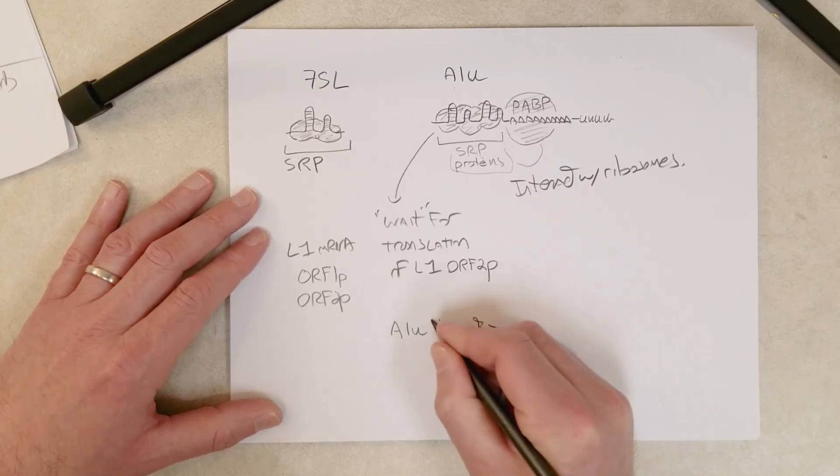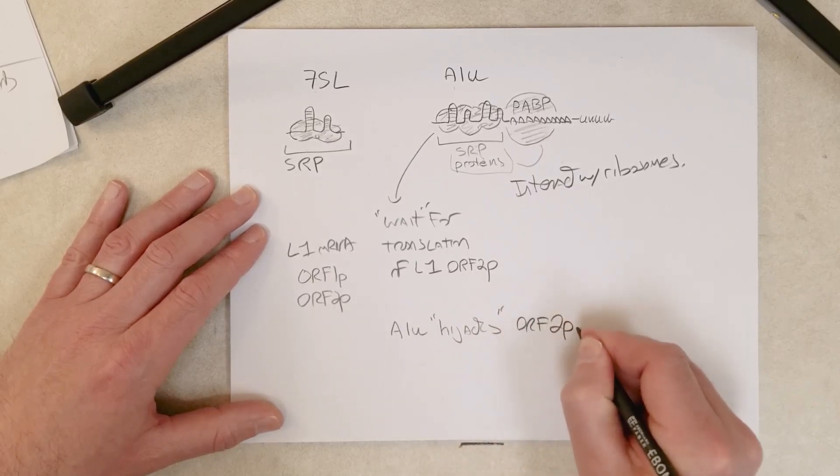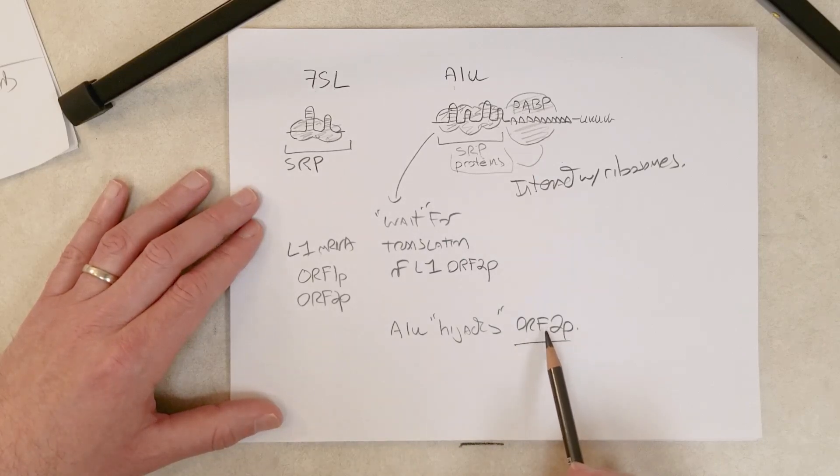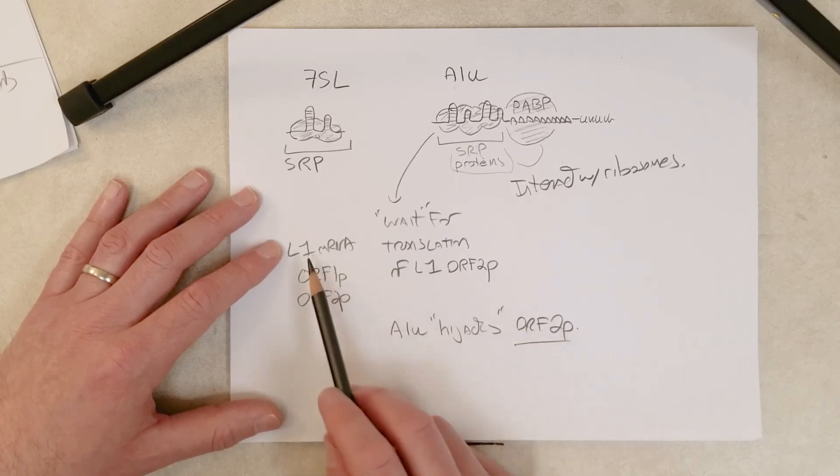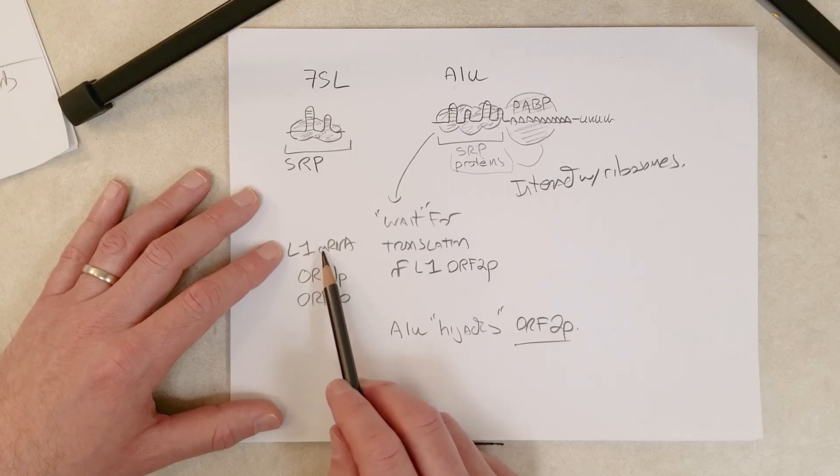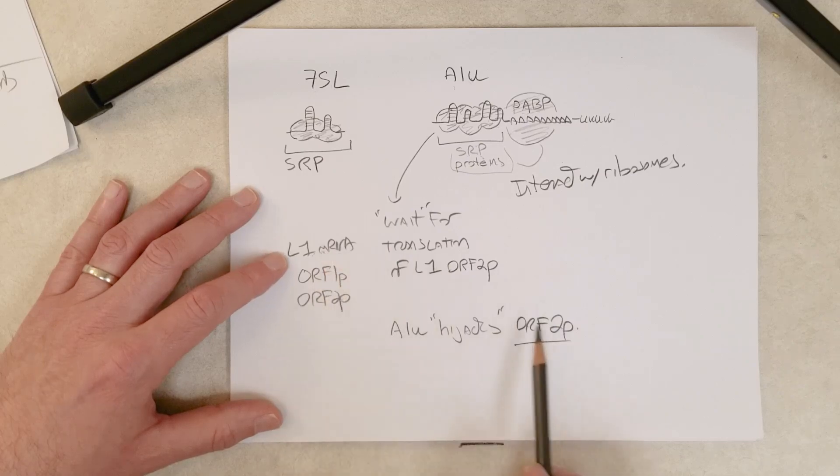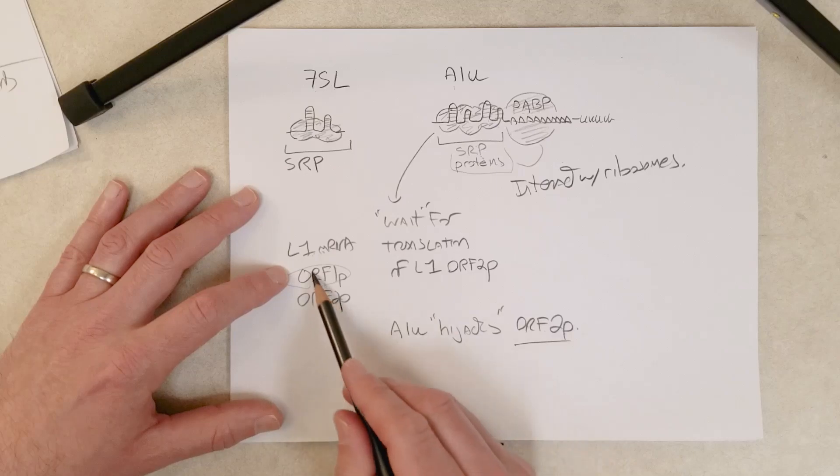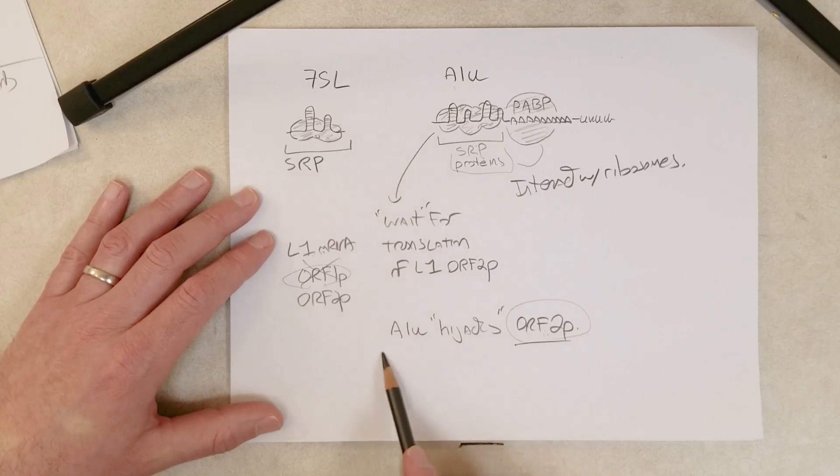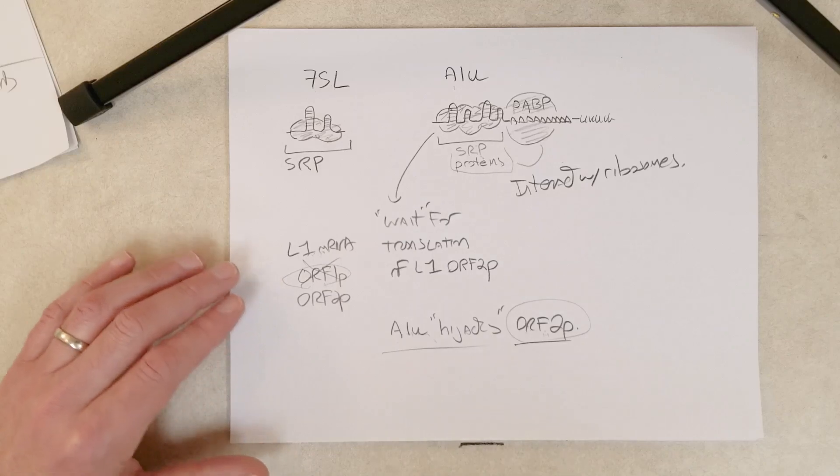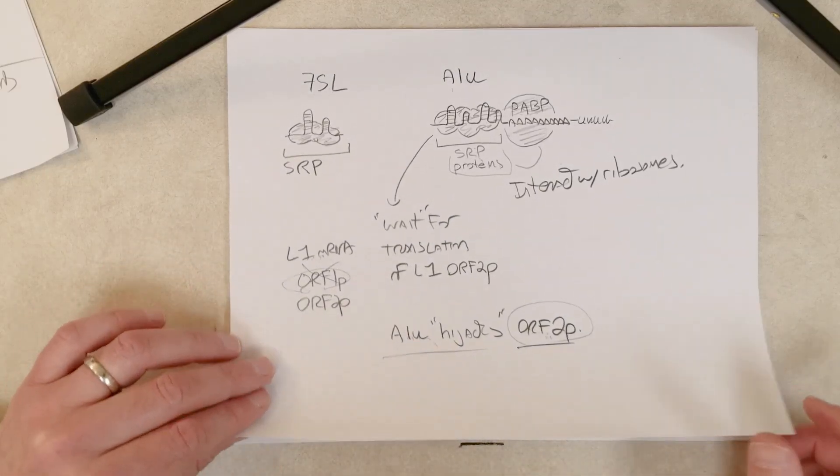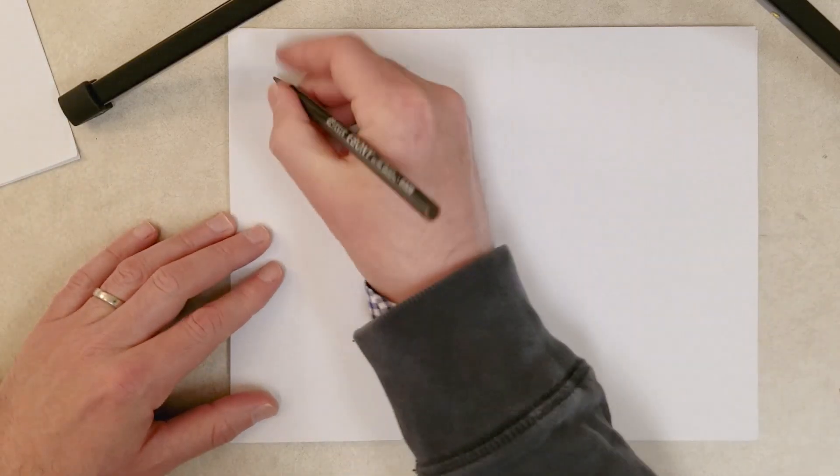ALU hijacks ORF2P. Remember, with the L1 transposition mechanism, ORF2P binds that L1 messenger RNA right after it's been translated, then it brings L1 messenger RNA back into the nucleus as part of the transposition mechanism, along with ORF1P. However, ALU doesn't need ORF1P, it just uses ORF2P, and it possibly stays in contact with the SRP proteins. Once ORF2P is made, it binds the ALU RNA and transports it into the nucleus where it integrates using the same mechanism that L1 uses.